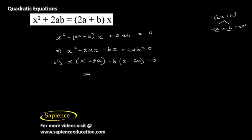Now take x minus 2a common outside: x minus 2a, x minus 2a, x minus b equal to 0.